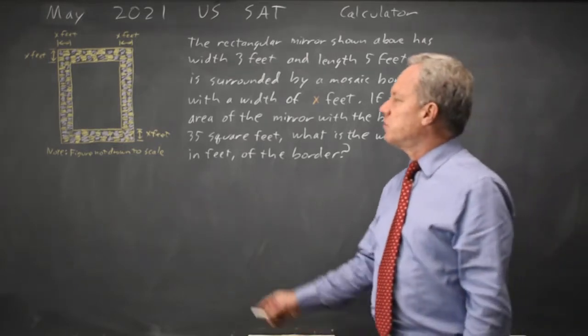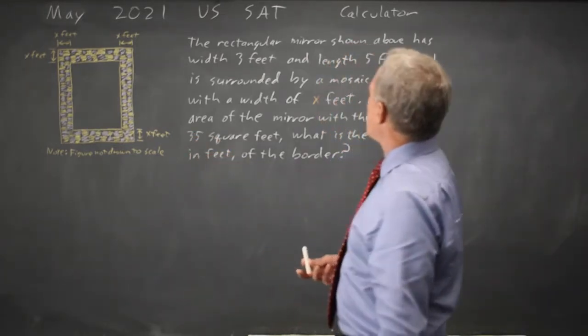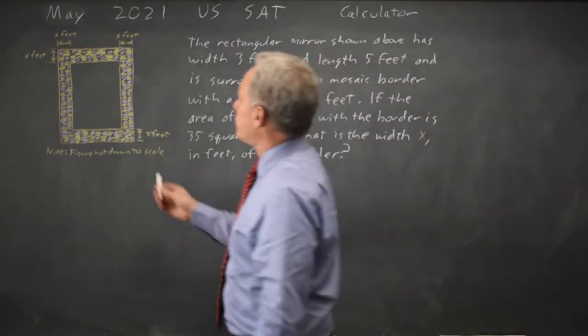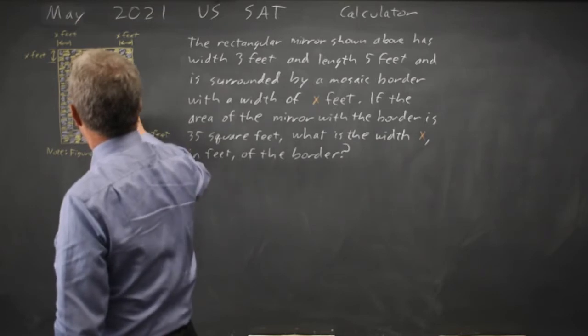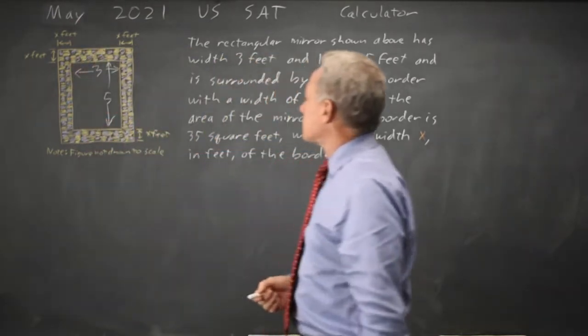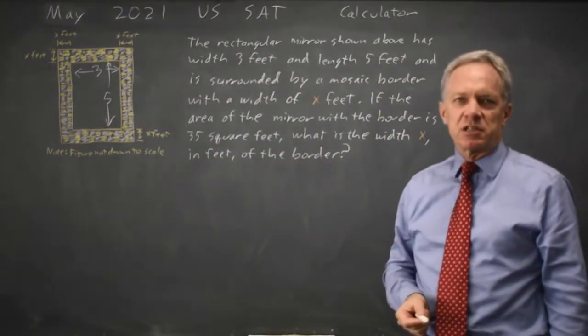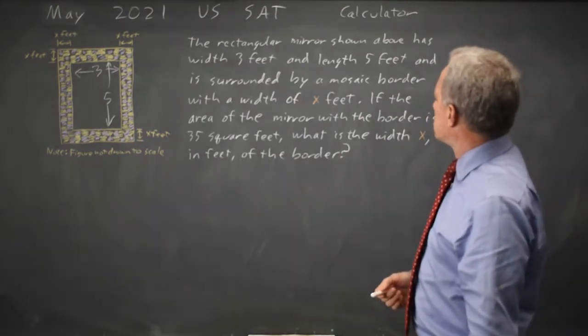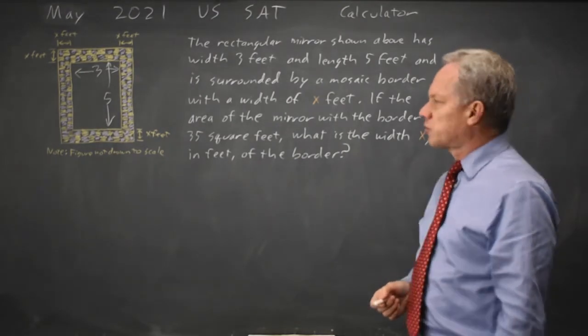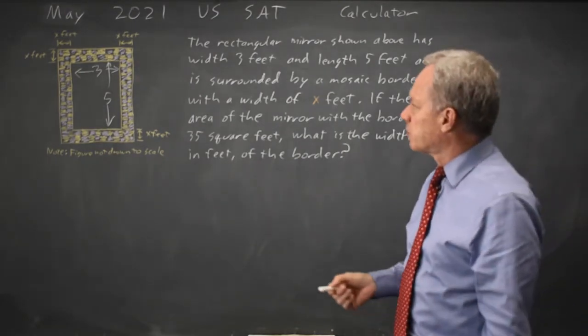College Board describes a mirror with a frame and the mirror is three feet by five feet. It doesn't matter which direction the three and five are. I'll draw it in that direction because that's the direction of the proportions.